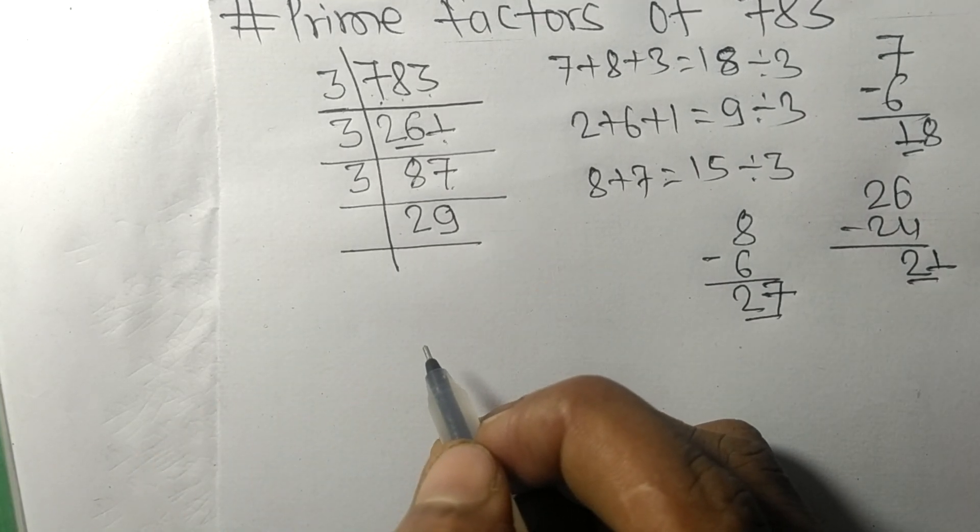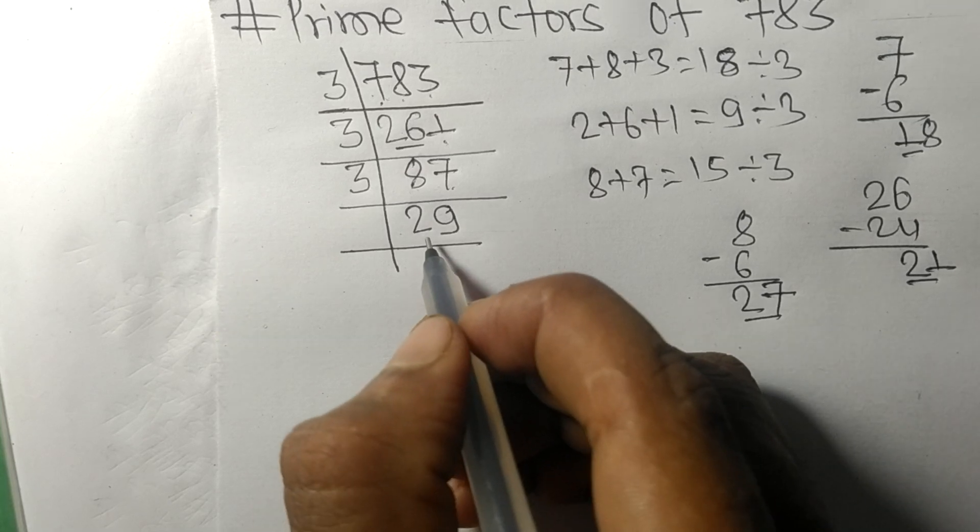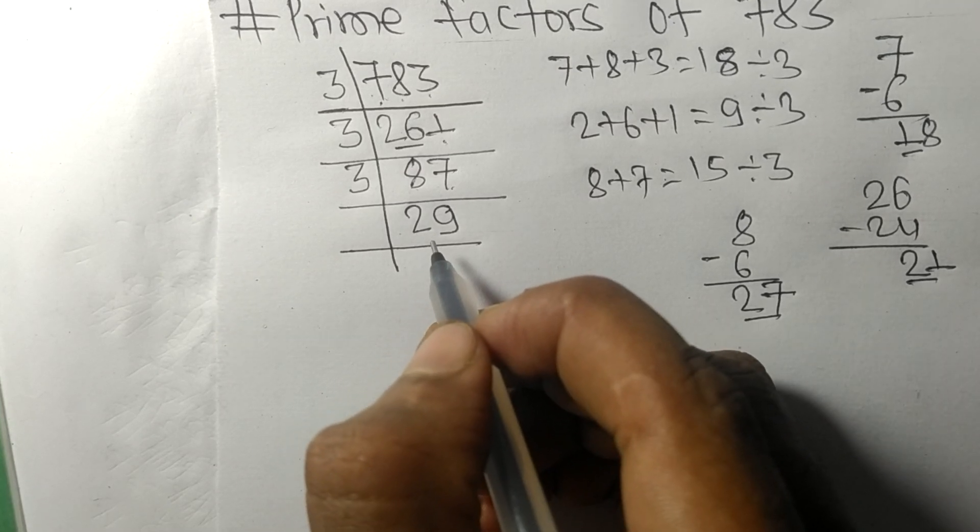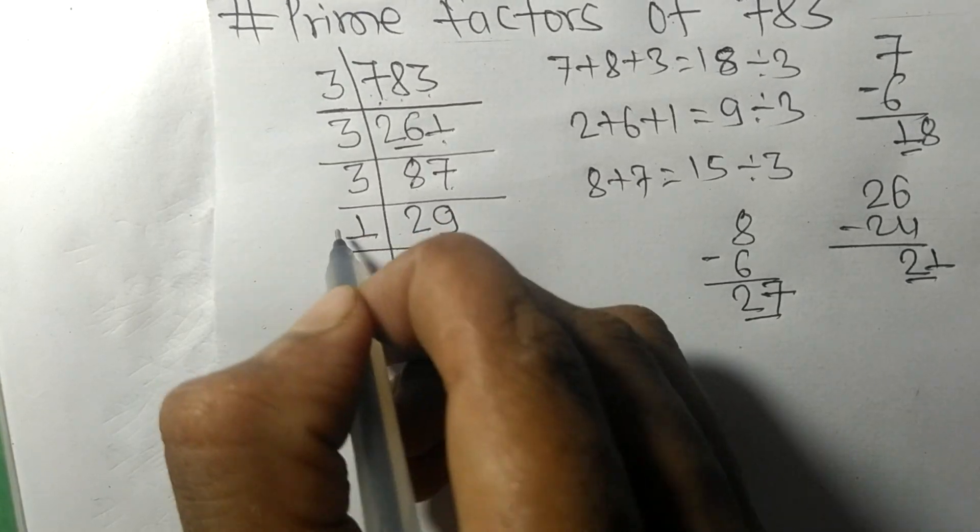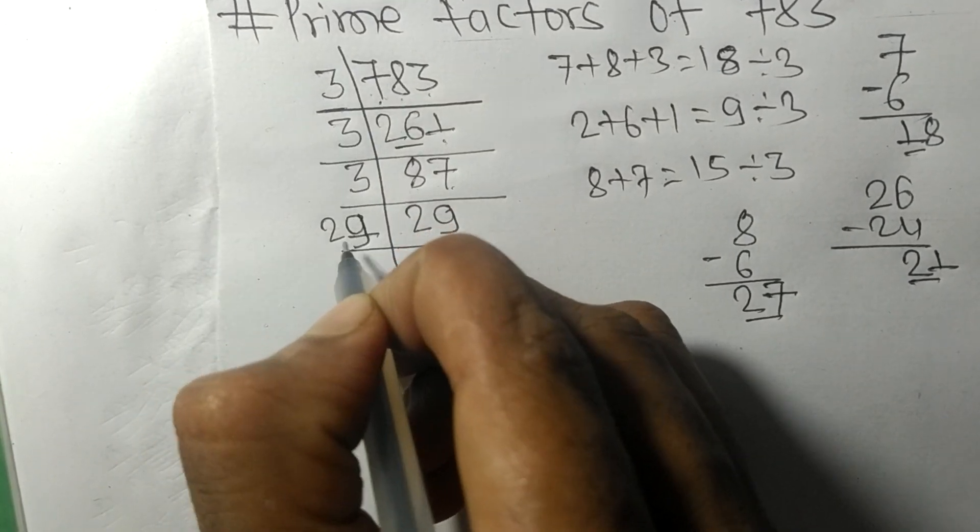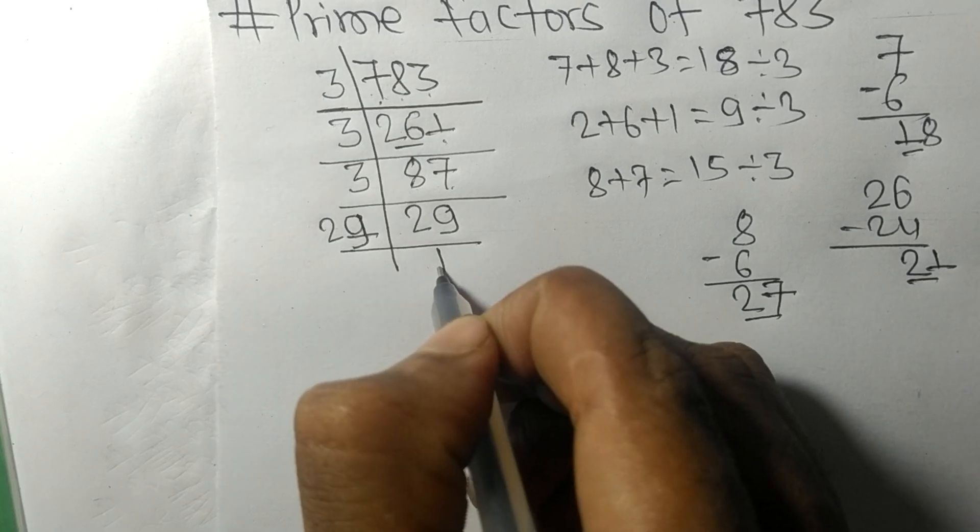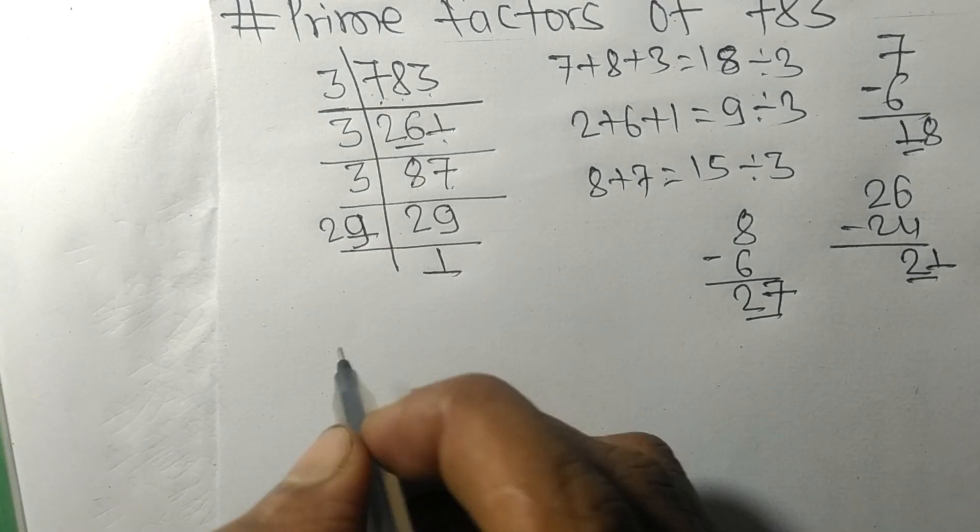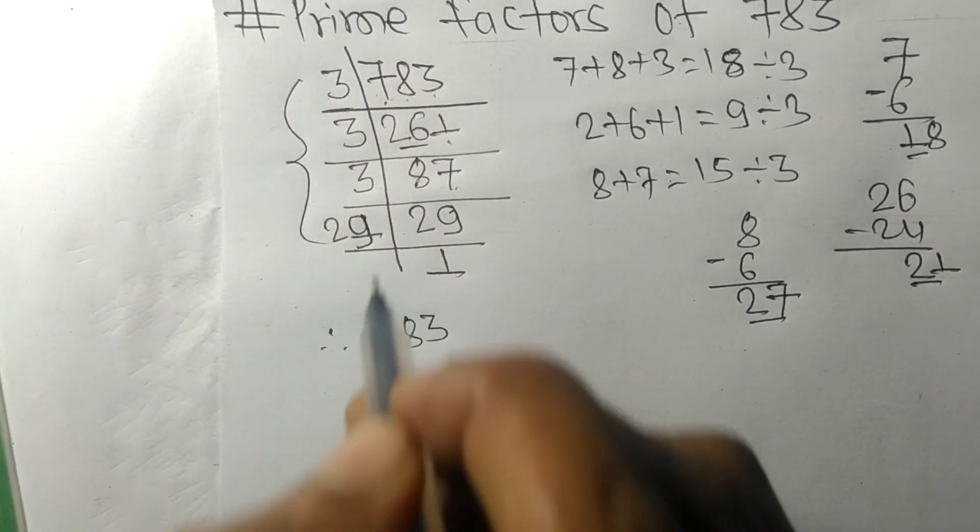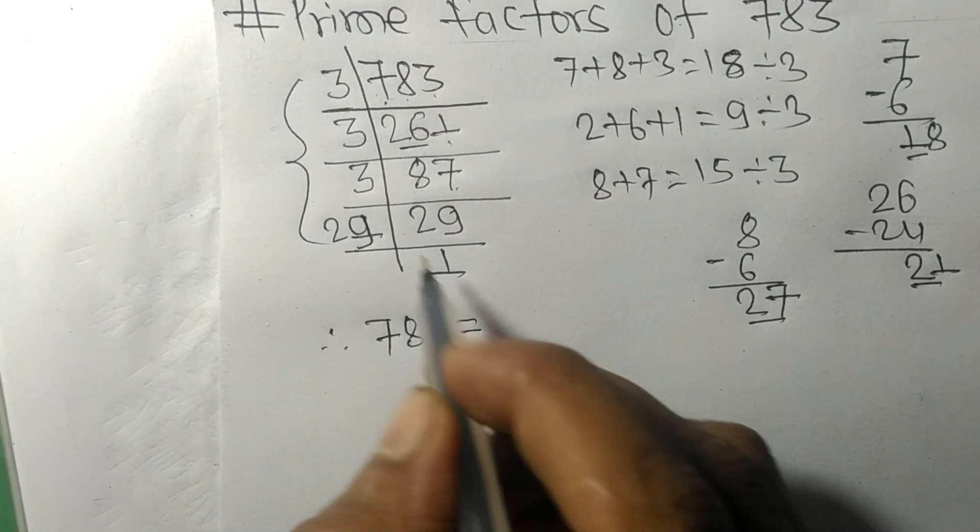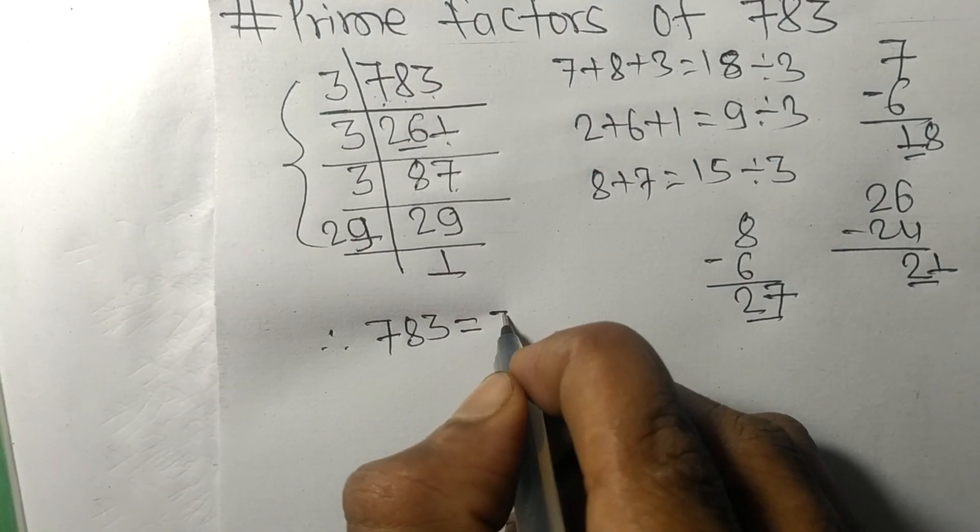29 is a prime number, so it is exactly divisible by 29 only. On dividing we get 1. Therefore, 783 is equal to, from this side it is 3 times 3 times 3 times 29.